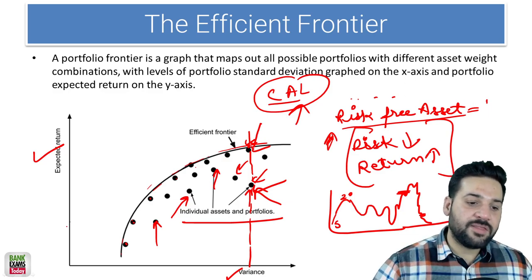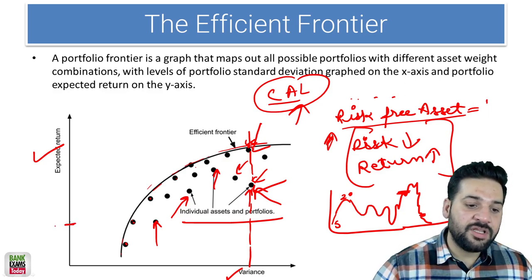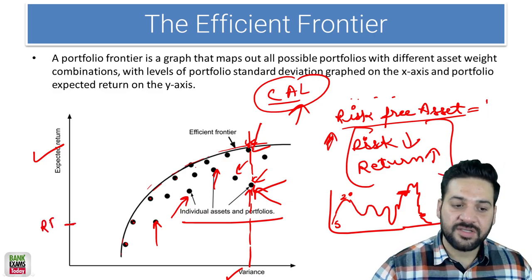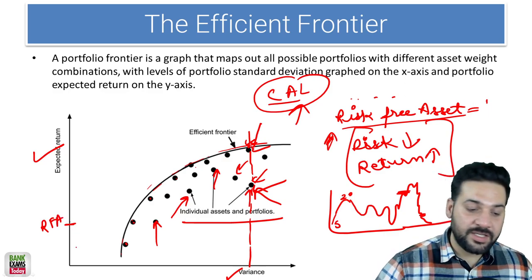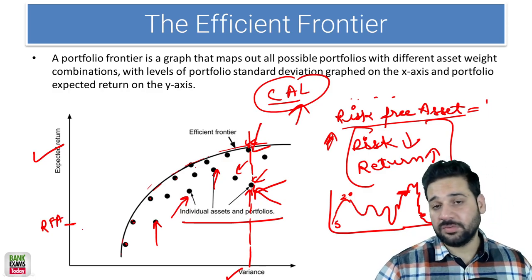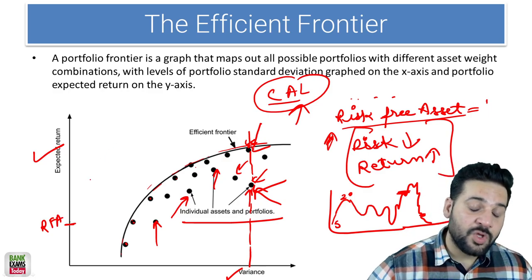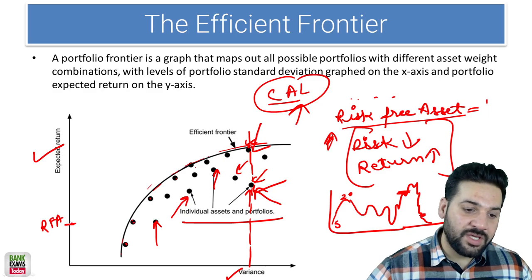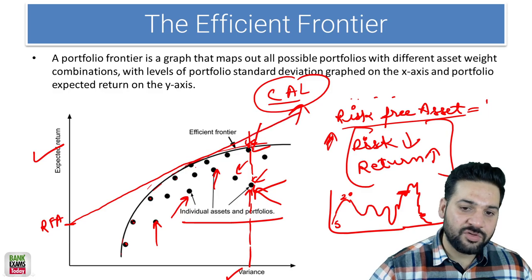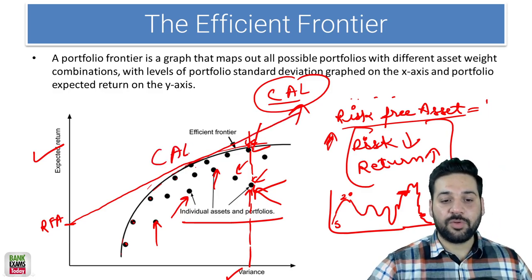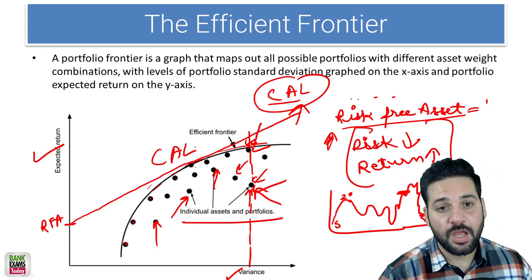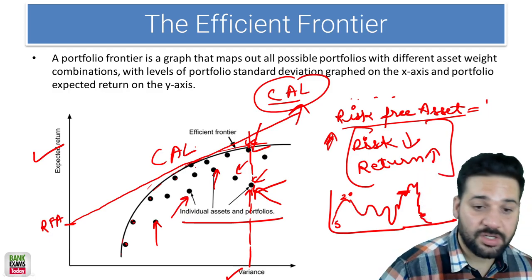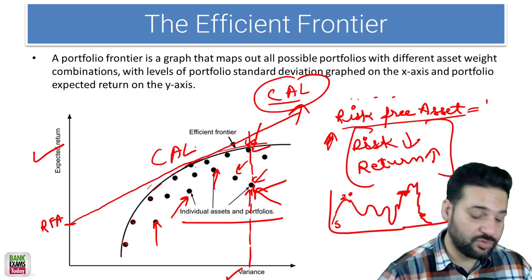So now let's say the return on the risk-free asset — the RFA — is at this point: it has a return and the variance is zero. There is no risk involved. So what we are going to do here is make a tangent line that meets the efficient frontier — that is the Capital Allocation Line. That is what you should know, that is what you are supposed to know.